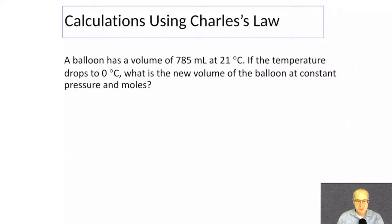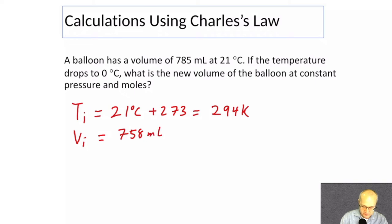Let's do a calculation. A balloon has a volume of 785 milliliters. T1, or Ti, equals 21 degrees Celsius. Let's just immediately calculate it into Kelvin. So that's going to be 294 Kelvin. V1, or Vi, equals 785 milliliters. T2 equals 0 degrees Celsius, or 273 Kelvin. Vf, or V2, is the question mark. We don't know how many milliliters that is. But we do know it should go down. We do know the volume should go down because the temperature is going down.